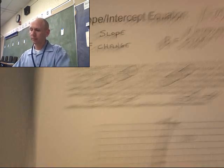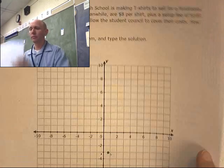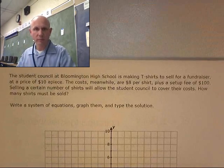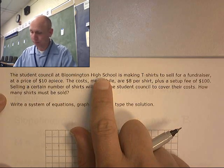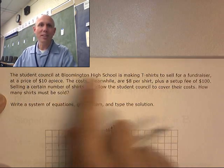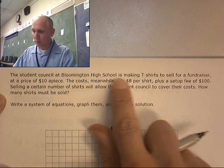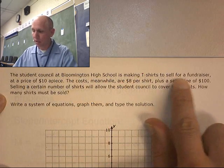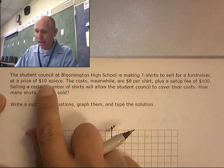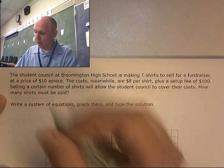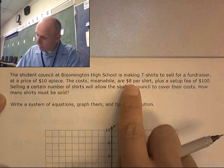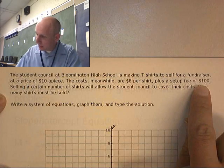Let's try another one. So, student council at Bloomington High School. Bloomington High. Hey, they're calling again. The student council at Bloomington High is making t-shirts to sell for a fundraiser at a price of $10 apiece. The costs, meanwhile, are $8 per shirt.